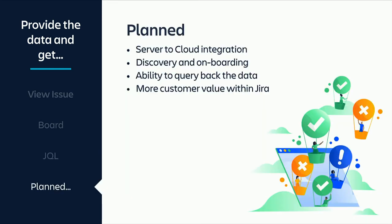That's today. But we also have other things we plan to add. The first is to support server-to-cloud integration. I'm assuming people out there are using Jenkins at some stage — it's a very popular build tool, and there are good reasons for sometimes needing to run local builds. So we're planning to support on-premises servers, so you can integrate Jenkins with Jira Software Cloud. This is going to be standards-based on OAuth.